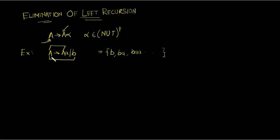Now we have to eliminate the left recursion so that it becomes another grammar G dash which generates the same language but without left recursion.